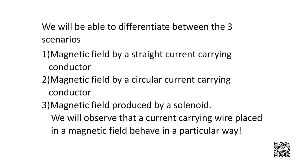Namaste dear learners. We are aware that a current carrying conductor has a magnetic field associated with it, and we've already performed experiments to understand the same. At the end of today's session, we'll be able to differentiate between three scenarios: magnetic field by a straight current carrying conductor, magnetic field by a circular current carrying conductor, and magnetic field produced by a solenoid. Let's also find out how a current carrying wire placed in a magnetic field behaves.